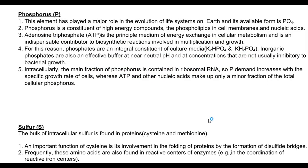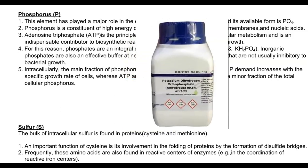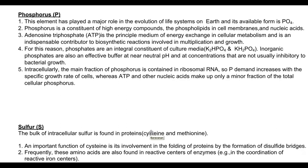When preparing growth media in the laboratory, phosphorus is supplied mainly in the form of two chemical constituents: dipotassium hydrogen phosphate and potassium dihydrogen phosphate. These chemicals supply phosphorus and also serve as buffers to maintain the pH of the media. Intracellularly, the major fraction of phosphorus is contained in ribosomal RNA. Phosphorus demand increases with the specific growth rate of cells, whereas ATP and nucleic acids form a minor fraction of total cellular phosphorus.